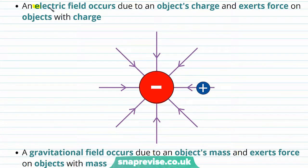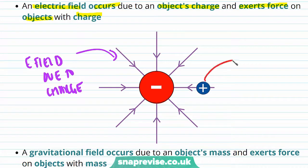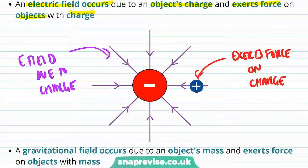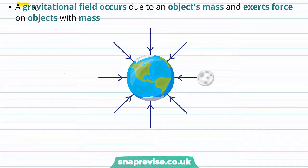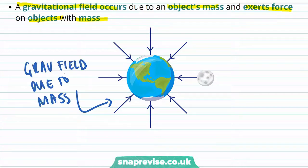An electric field occurs because an object has a property called charge and it exerts force on objects with charge. A gravitational field occurs due to an object's mass and exerts force on objects with mass. So here the Earth is generating a gravitational field due to its mass, and this exerts a force on the Moon due to the fact that the Moon has mass.